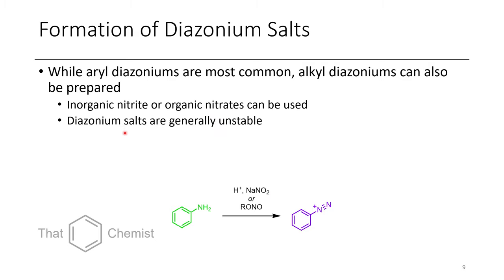It's also possible to use inorganic nitrite or organic nitrites to achieve this transformation. Diazonium salts are generally unstable, even if they're aromatic derivatives. You can isolate them, but you have to be very, very careful if you do, because these things are just dying to kick off nitrogen.